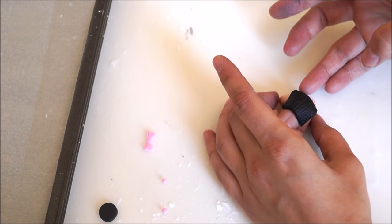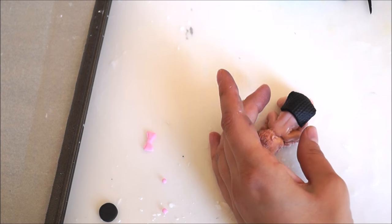Glue your piece to your figurine using a small amount of water. Water and fondant will create glue.